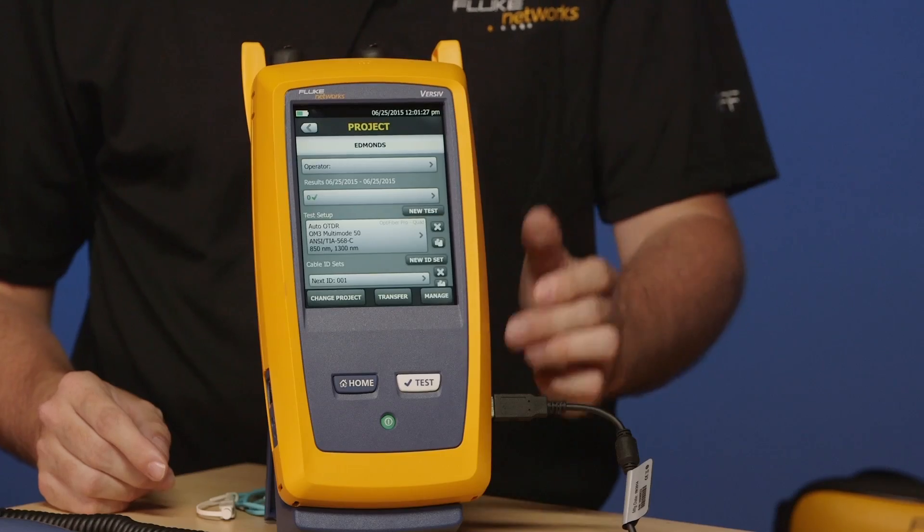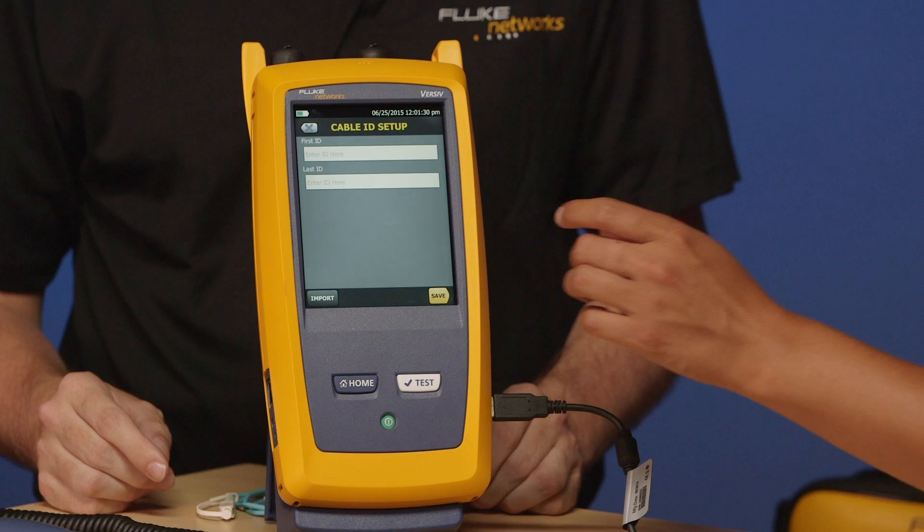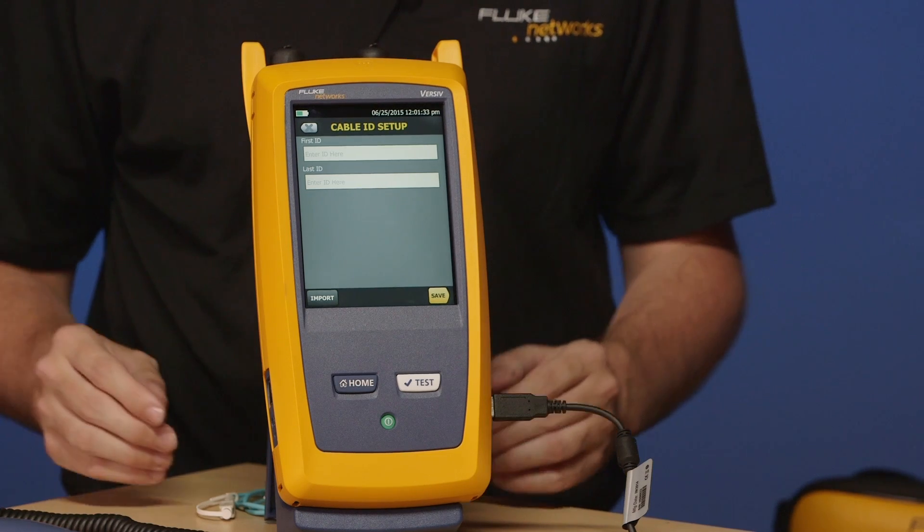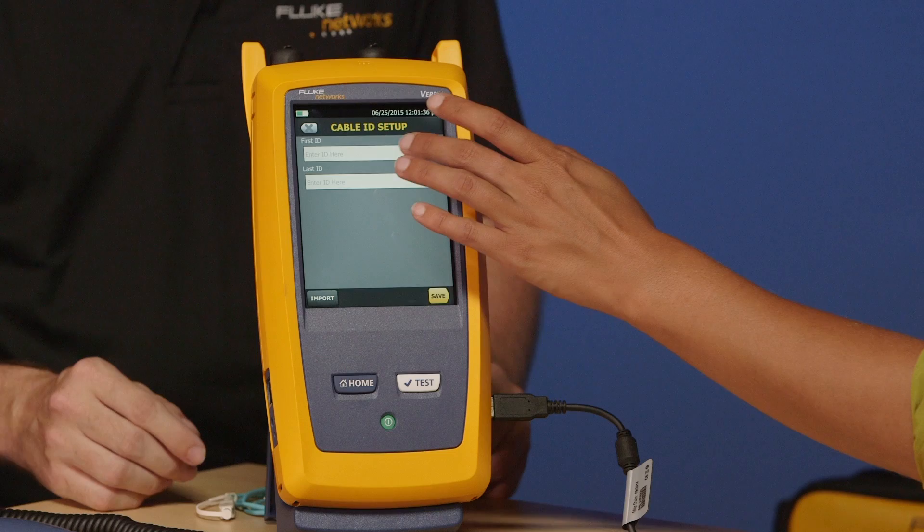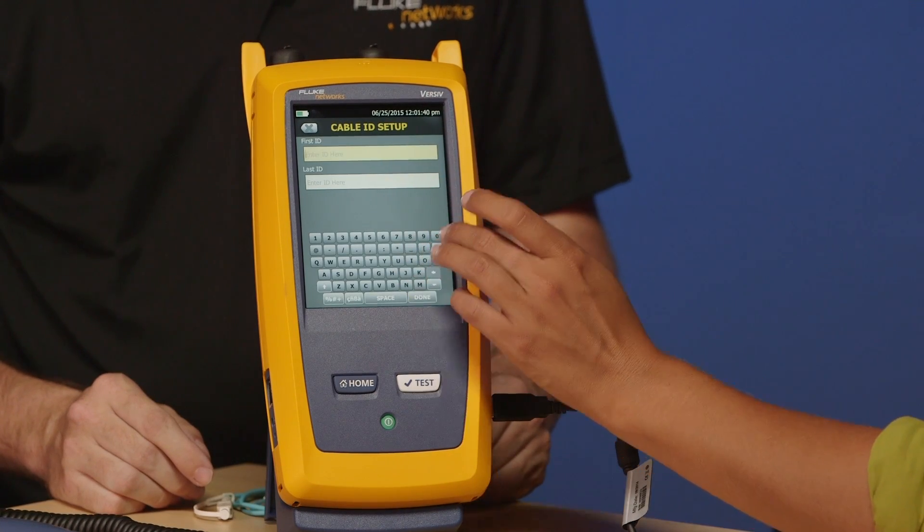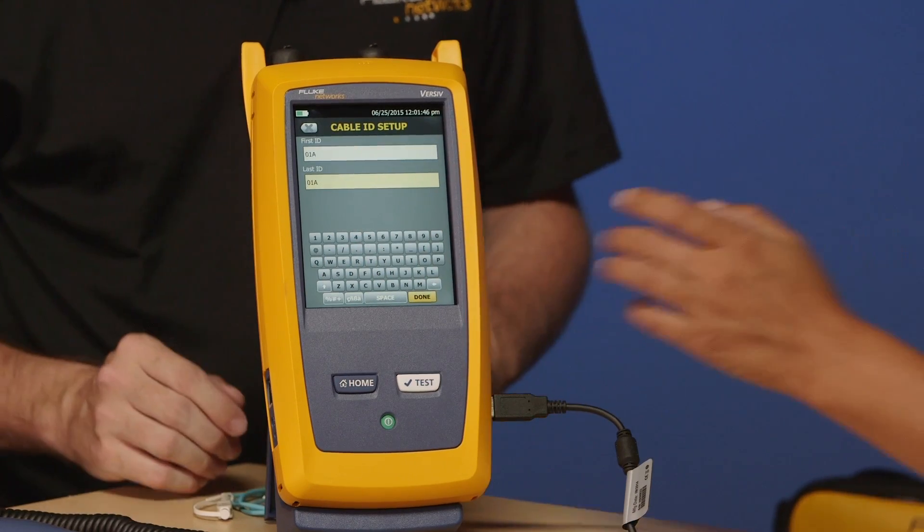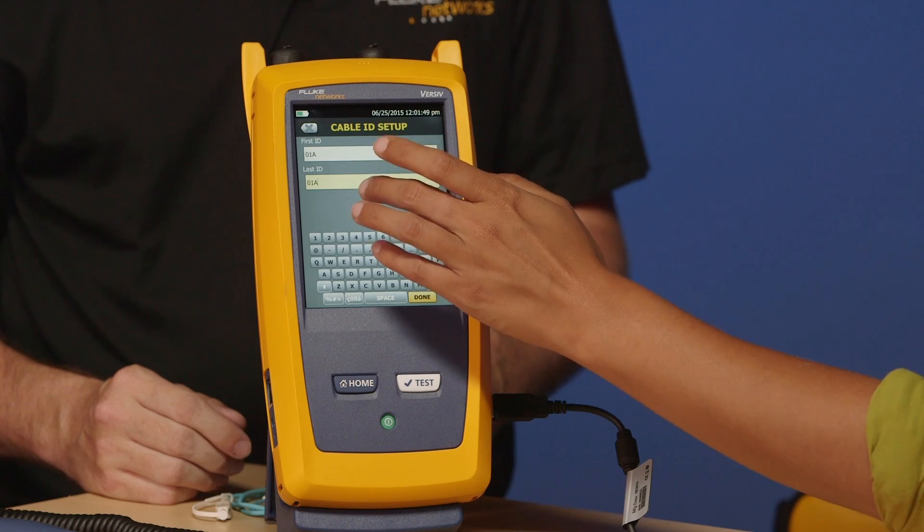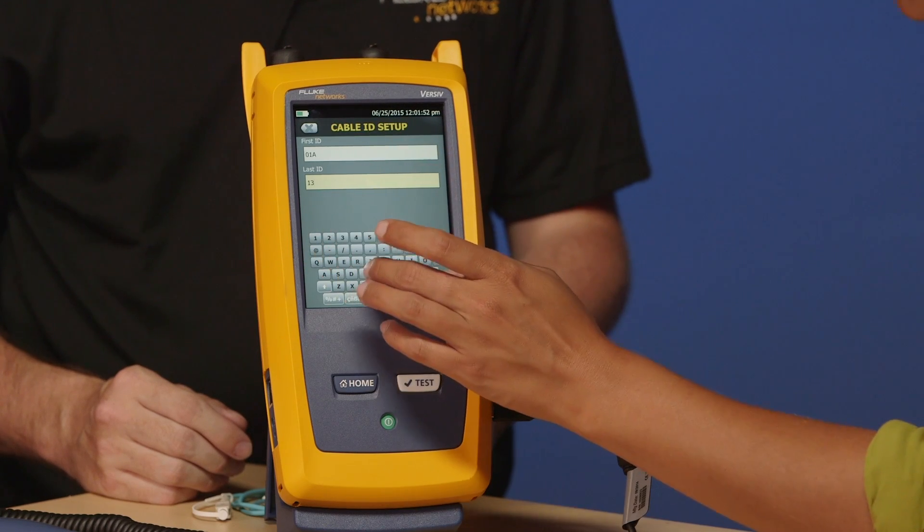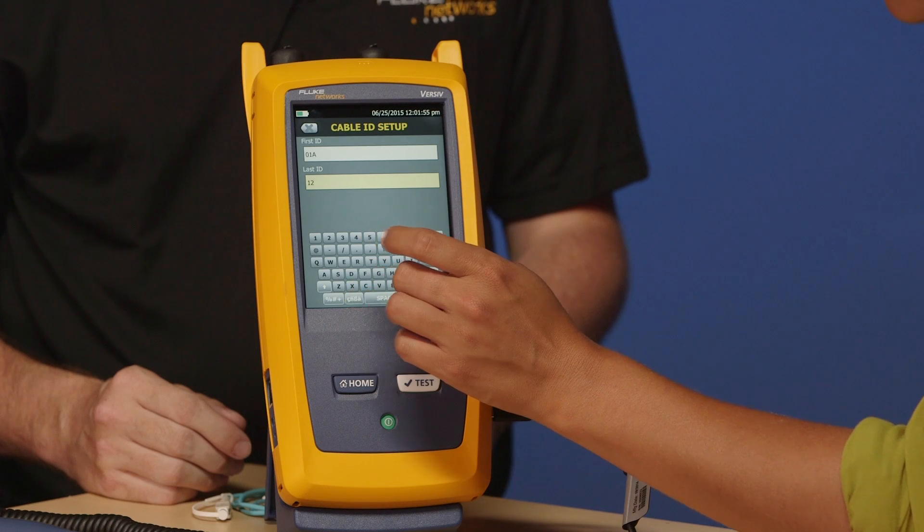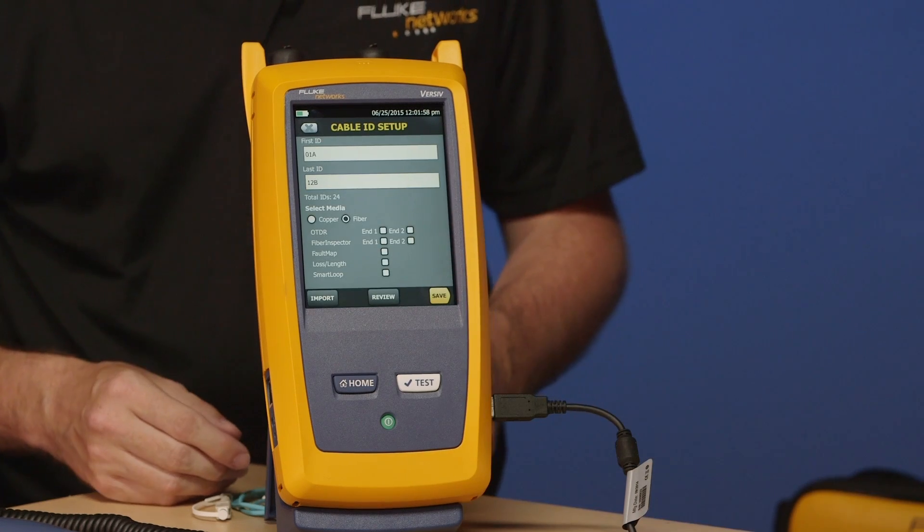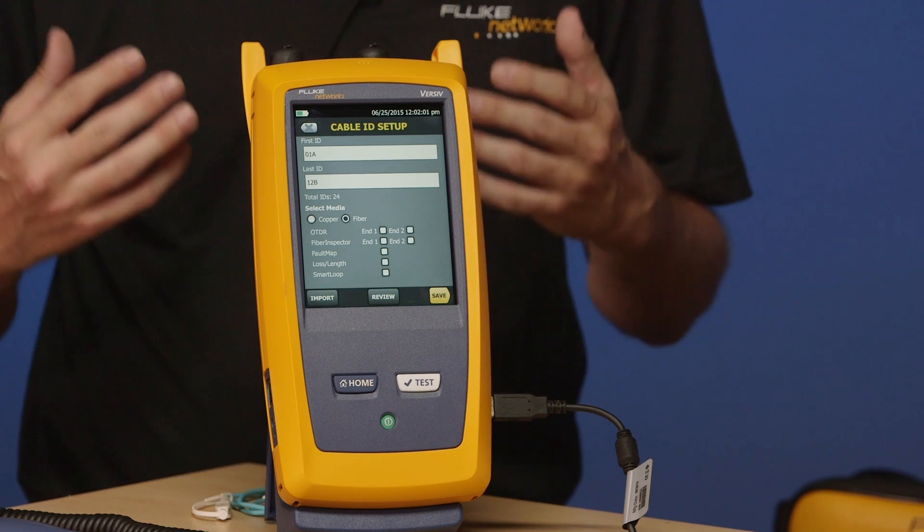That's just a reminder also is one of the other benefits of setting up your projects is you can actually pre-define the cable IDs. And you've seen us do that on the other videos. And we're going to do that again here. So, on the cable IDs, you'll see New ID. So, go ahead and tap that. And we'll pick a typical simple fiber ID. So, we'll start with 01A. So, if you'd like to tap in 01A. And then go down to the next one. And we'll end in 12B. Excellent.